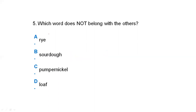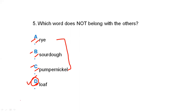Which word does not belong with the others? Option A is rye, option B is sourdough, option C is pumpernickel, and option D is loaf. Rye, sourdough, and pumpernickel are all types of bread — different types of breads. Loaf refers to a piece/unit of bread. So options A, B, and C are in the same category, and the correct answer is option D, loaf.